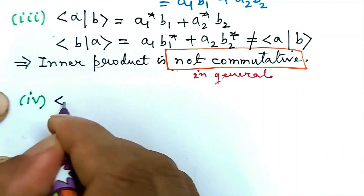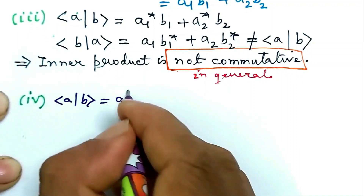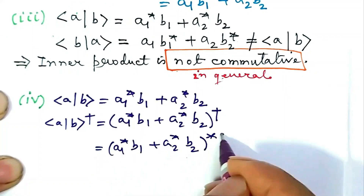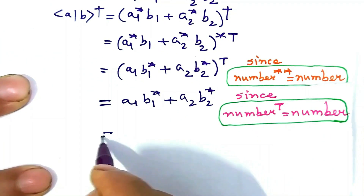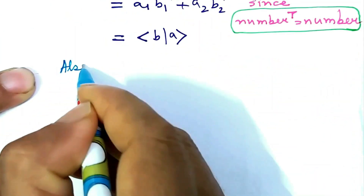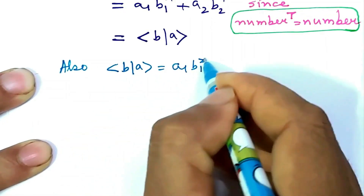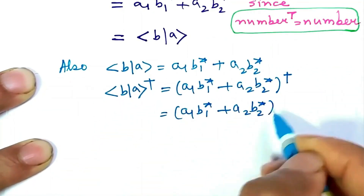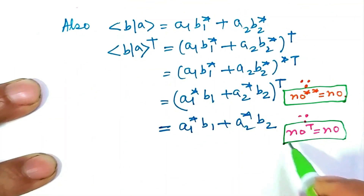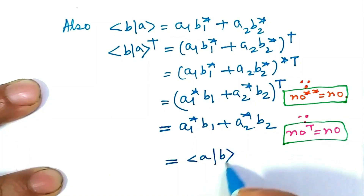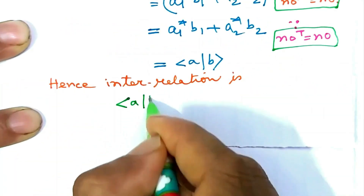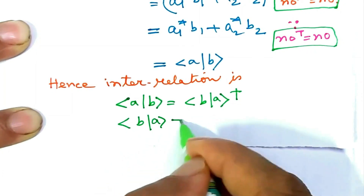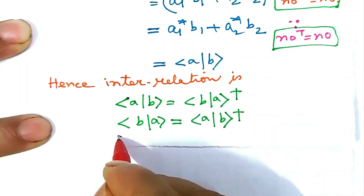For answer to four: consider bra A ket B = a1*·b1 + a2*·b2. If we take the dagger of bra B ket A, which equals a1·b1* + a2·b2*, its dagger is a1*·b1 + a2*·b2, and we see that this equals bra A ket B. Hence the interrelation is: bra A ket B = (bra B ket A)†, and bra B ket A = (bra A ket B)†.